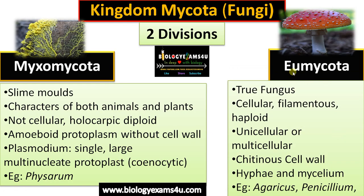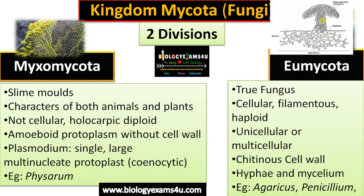The second division, Eumycota or true fungi, is cellular and filamentous, and haploid — the diploid stage is represented only at the zygote. It may be unicellular or multicellular with a definite chitinous cell wall. The plant body has hyphae; individual filaments are called hyphae and grouping of hyphae forms mycelium. Examples include Agaricus, Penicillium, etc.